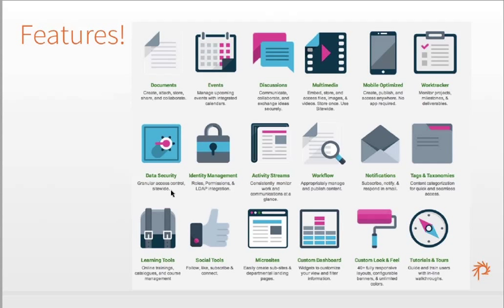Probably the most important feature is our data security and identity management — the ability for Open Atrium to create collaboration spaces and sharing spaces on an intranet that are extremely controllable for security and data privacy, governing who can view and participate in each space at a very granular level. In addition, there are activity streams, workflow, notifications, tags and taxonomies, learning and social tools, the ability to create microsites, customize the dashboard and look and feel, and even create interactive tutorials and tours.